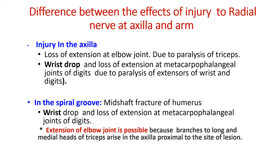When there is a lesion of the radial nerve in the spiral groove, occurring as a result of a mid-shaft fracture of the humerus, there will be wrist drop and loss of extension at the metacarpophalangeal joints of the digits. However, there will be no loss of extension at the elbow joint — extension at the elbow will still be possible, because the branches of the radial nerve to the long and medial heads of the triceps arise when the radial nerve runs in the axilla, that is, proximal to and before the site of the lesion.